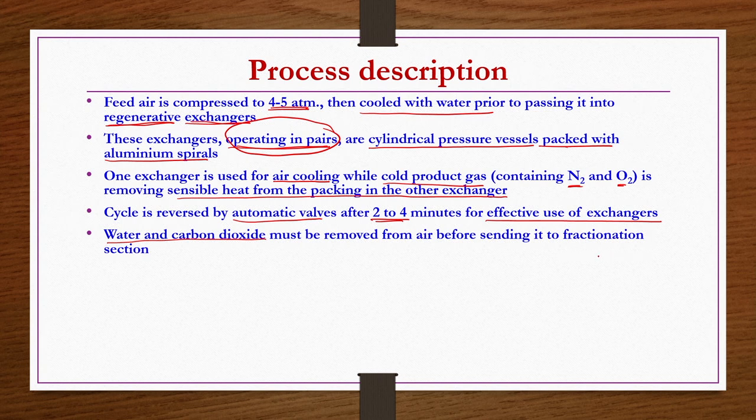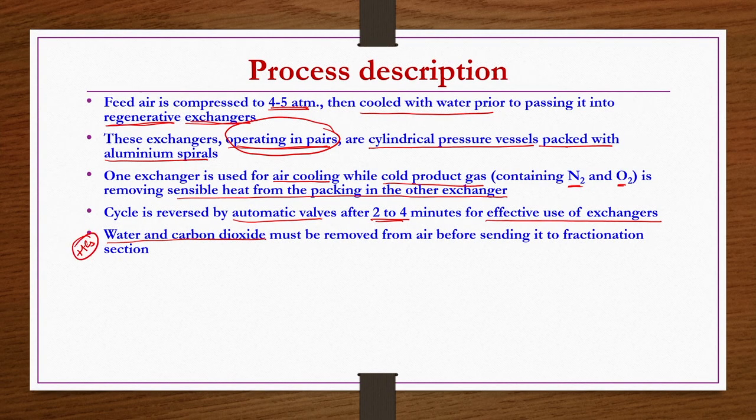Water and carbon dioxide must be removed before sending air to the fractionation section. In simple terms, this production process for O2 and N2 has two steps: the exchanger step and the fractionation step, with a compressor for drying air before the exchanger step. In the exchangers, air is cooled in one while sensible heat is removed in the other, cycling every 2 to 4 minutes. Not only water and CO2 but also any hydrocarbons present must be removed.